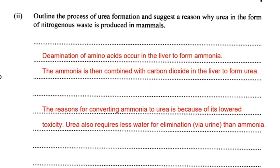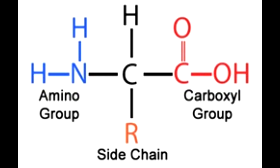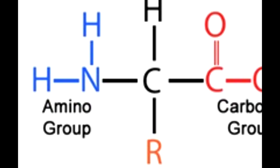Part 2: outline the process of urea formation and suggest a reason why urea, as nitrogenous waste, is produced in mammals. When you eat proteins, they are hydrolysed to form amino acids — their monomer form. Amino acids contain a carboxyl group, a hydrogen atom, an R-group, and an amino group. If the amino group is removed, that is called deamination. Deamination occurs in the liver to form ammonia. The amino group contains nitrogen and hydrogen, so the nitrogen is being removed — thus, nitrogenous waste.